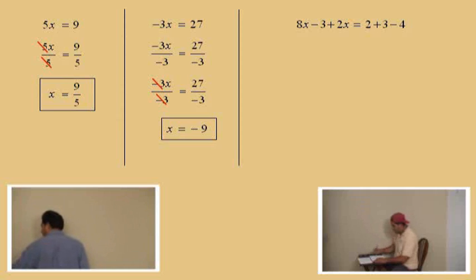All right, Charlie. On our left-hand side, what are the like terms there? The 8x and the 2x. Okay. It is that 8x and the 2x. So when you add 8 apples plus 2 more apples gives you how many apples, Charlie? 10 apples. Okay. So 8x plus 2 more x gives you 10x. Okay. So that will combine to 10x.